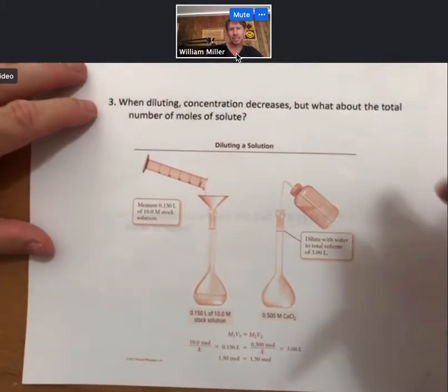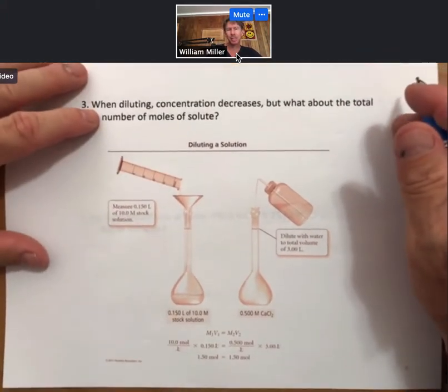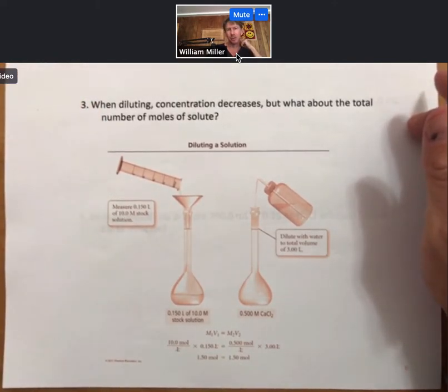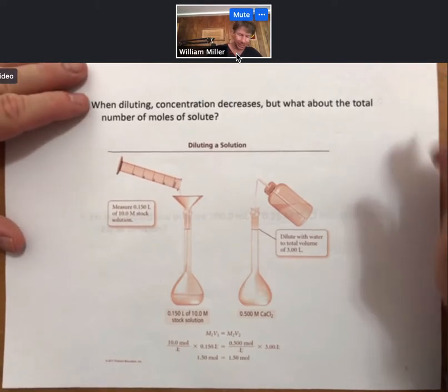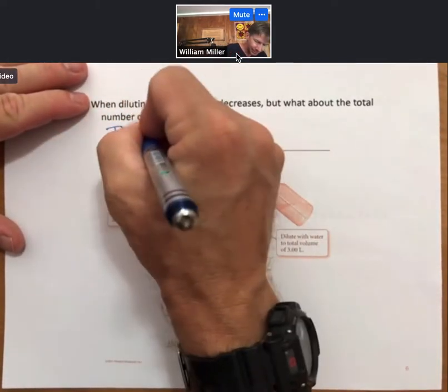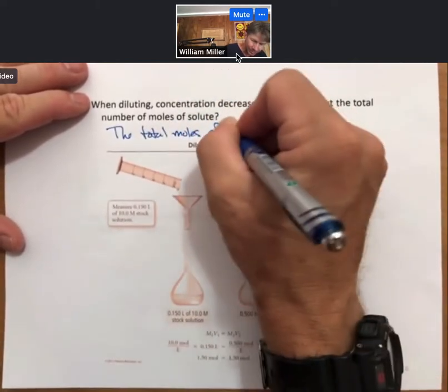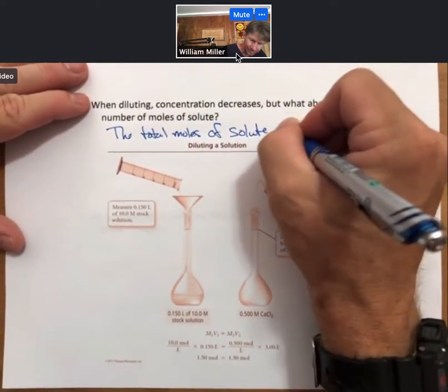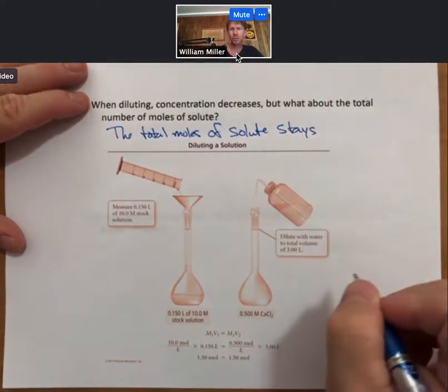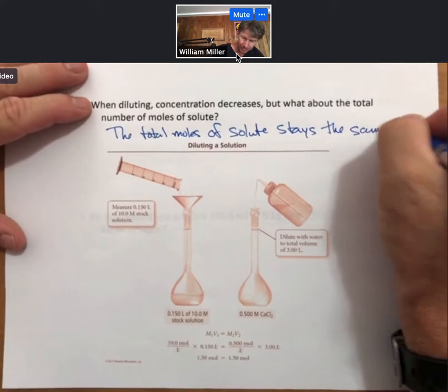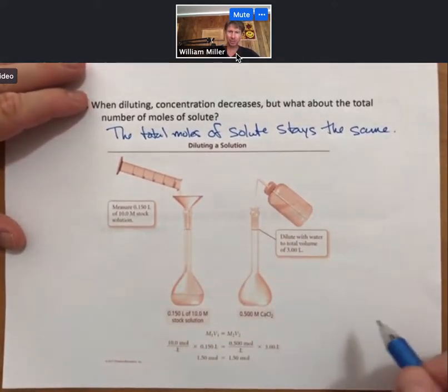I want to emphasize this point. When diluting, concentration decreases, but what about the total number of moles of solute? The total moles of solute stays the same. And that's illustrated in this picture right here.